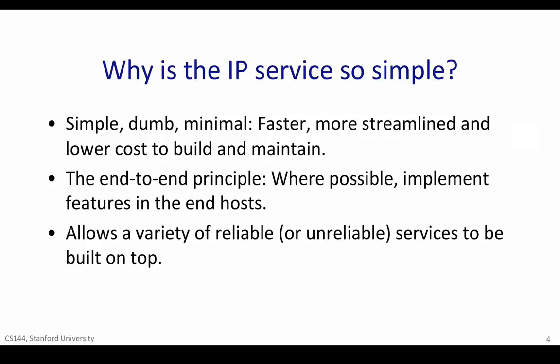A simple IP service also allows a variety of reliable or unreliable services to be built on top. If IP was reliable — in other words, if any missing packets were retransmitted automatically — then it would not be ideal for some services. For example, in real-time applications like a video chat, there might be no point in retransmitting lost data, because it might arrive too late to be useful. Instead, the application might choose to show a few blank pixels, or use the pixels from the frame before. By not providing any reliability guarantees, IP lets the application choose the reliability service it needs.